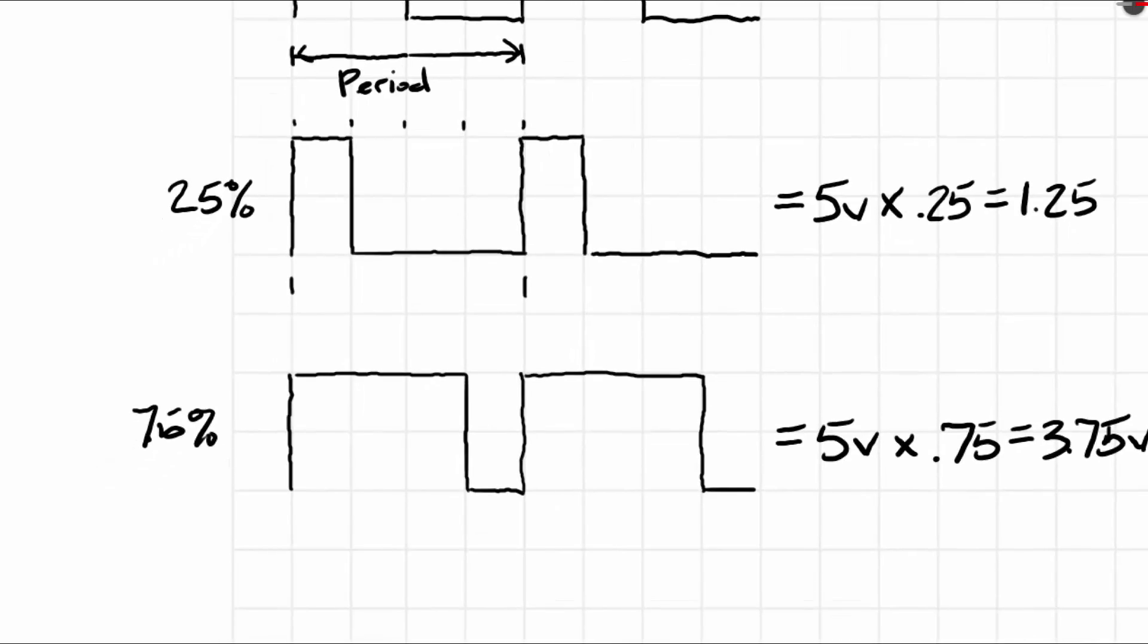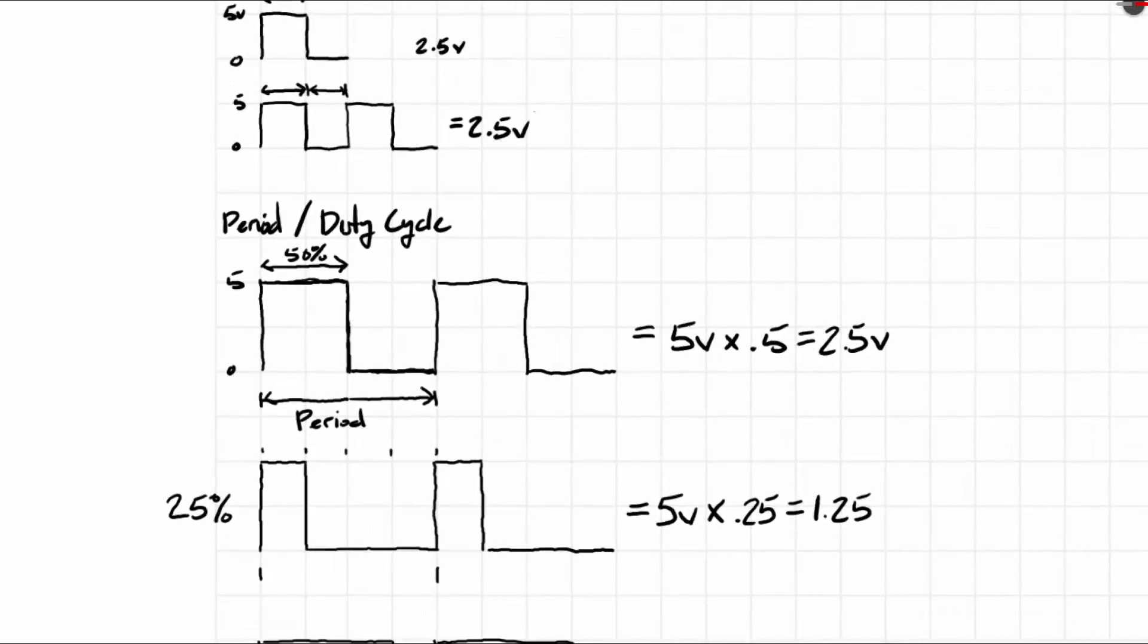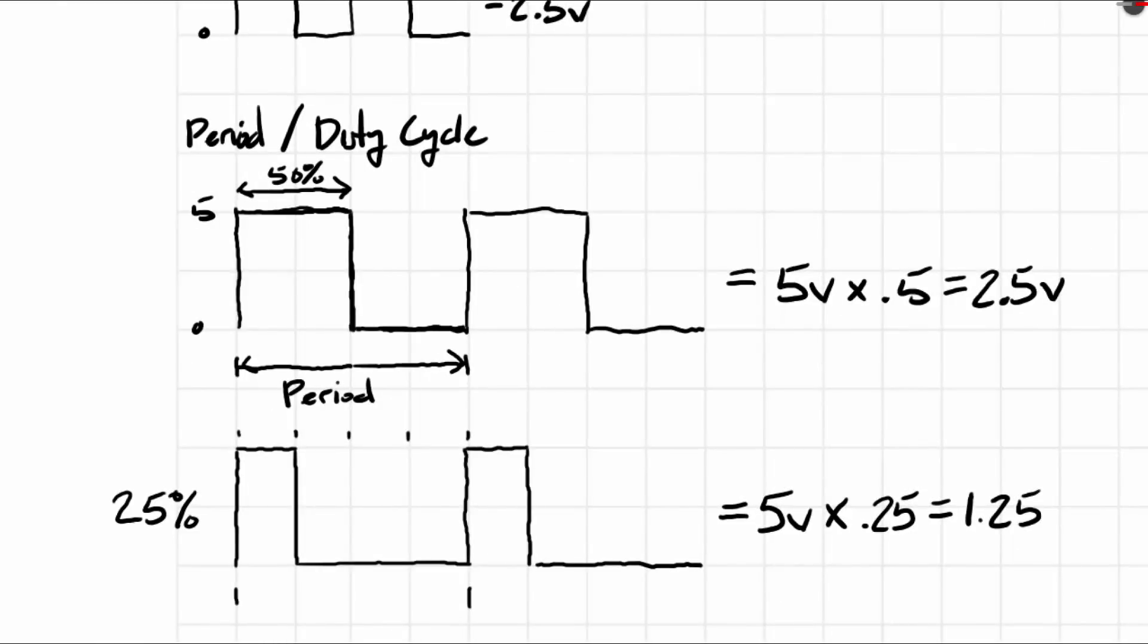The reason why the voltages equal the voltages they do is because this is 0V, this is 5V. And you'll see, like in the 50% example, it is 5V for 50% of the time, time being the period, and then it is 0V the rest of the time. This being a pulse width modulation signal that's fast enough, you would discern this specific voltage, say on a multimeter or watching an LED being dimmed.